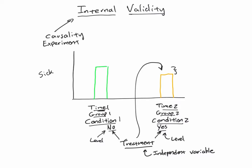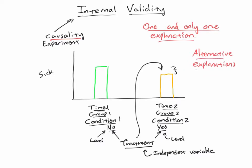Now, one of the issues here is that for us to be justified — for us to be valid in making that conclusion and saying that our treatment caused the observed difference between the conditions — that has to be the only explanation. So in order to have internal validity, in order to be justified in saying that we have determined the causality of something, we have to have one and only one explanation for the difference that we observe. If, on the other hand, we have an alternative explanation — some other reason why we might have seen that difference — then we are not justified in claiming that our treatment caused the difference. And that is what we call a threat to internal validity.